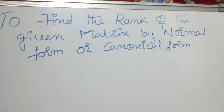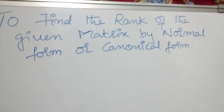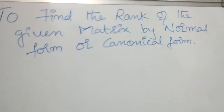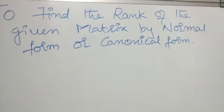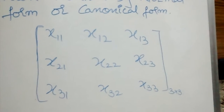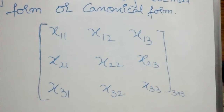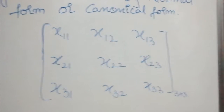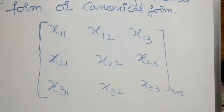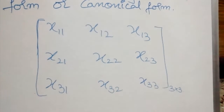Finding the rank of a given matrix by normal form or canonical form. Let's see the procedure for how to find the rank of the matrix by normal form. Let the given matrix be in the form x11, x12, x13, x21, x22, x23, x31, x32, x33 — the order of the given matrix is 3 by 3.